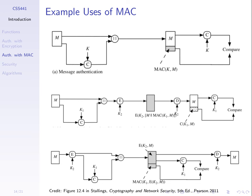With authentication, the idea is that we want to be able to check at the receiver that the message we've received has not been modified and it comes from the person who they claim they are — they're not pretending to be someone else. So we want to prevent modification and masquerade attacks. We take our message and attach some extra information that allows the receiver to detect if anything's been modified. We can't stop someone modifying the message, but we can detect it.